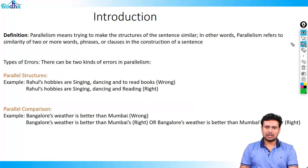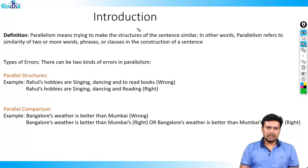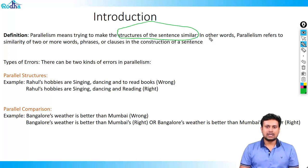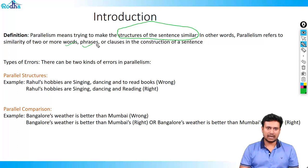When we try to understand parallelism, the first thing is to understand what it exactly means. Parallelism in the simplest sense means trying to make the structure similar in any sentence. Basically, what we're trying to do is make the words, phrases, or clauses parallel or similar in a sentence.